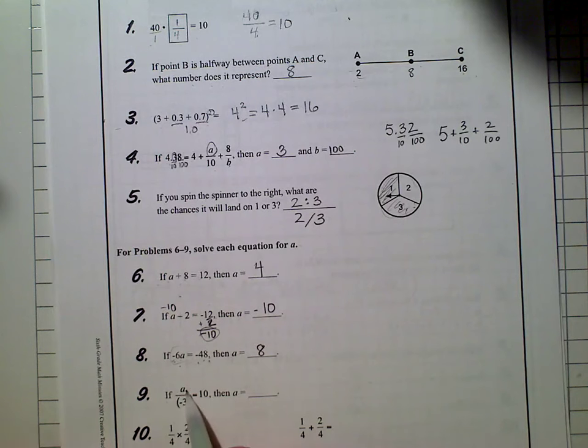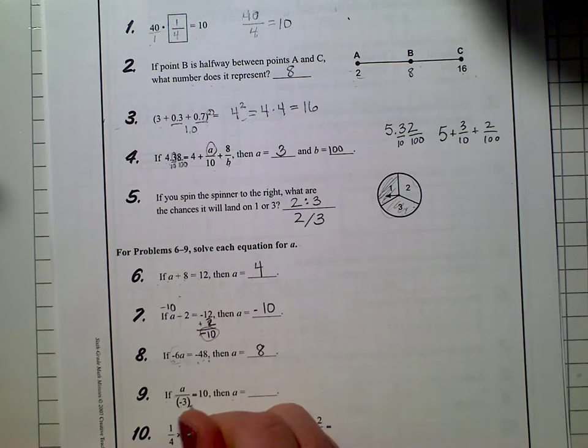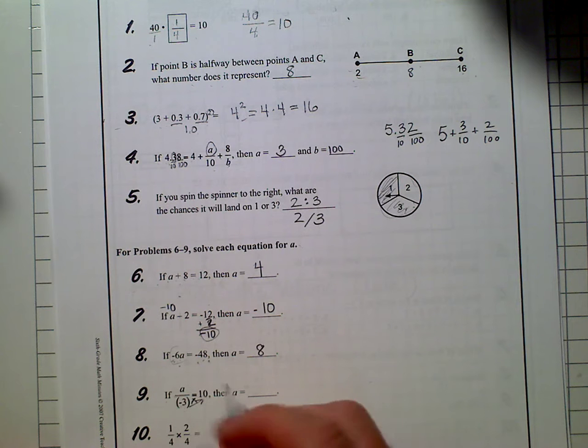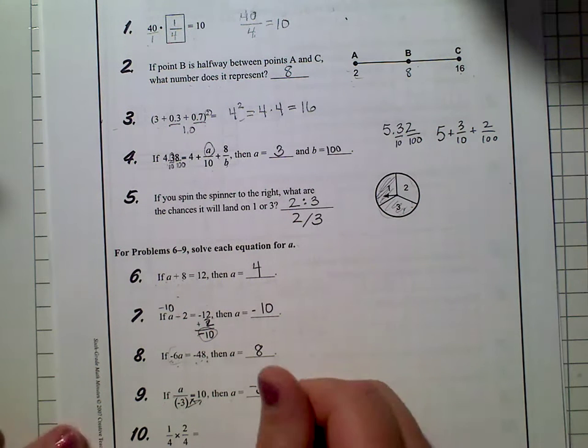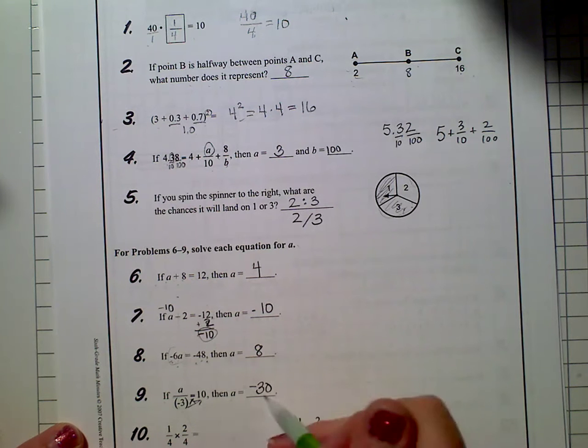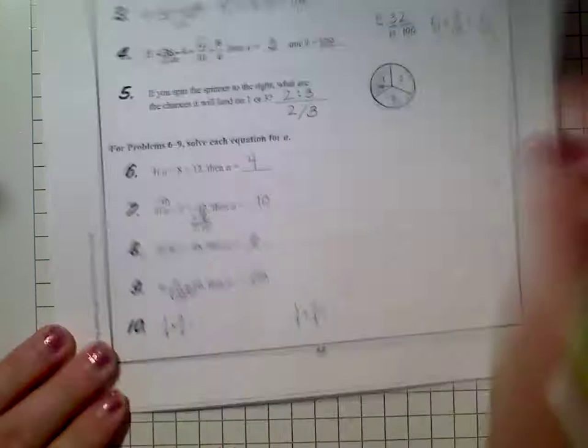If A over negative 3 equals 10, what would A equal? Just so you know, you're going to just multiply 3 times 10, because that's the opposite of division. So we would multiply negative 3, which would get us to negative 30. And it has to be a negative, because a negative divided by a negative, or a negative times a negative is a positive.